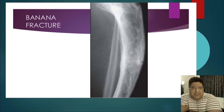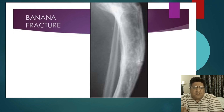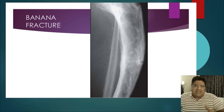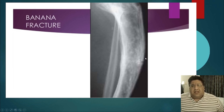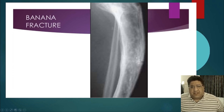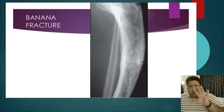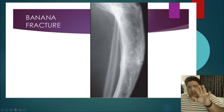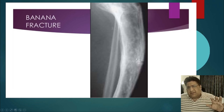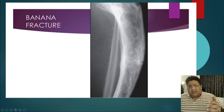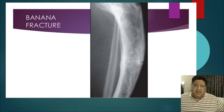Now for the radiology of Paget's — several important X-ray signs. The first is an incomplete unicortical fracture in the anterior cortex of the tibia, seen on a lateral view in the diaphysis. Radiologists imagined a banana and named it the banana fracture.